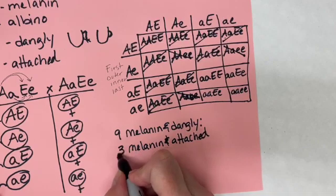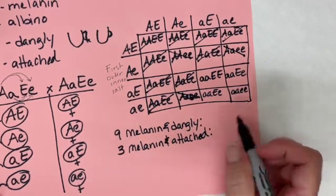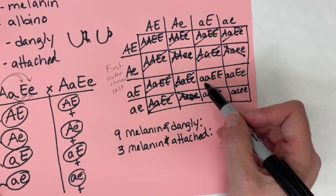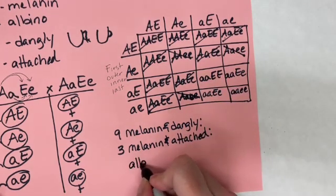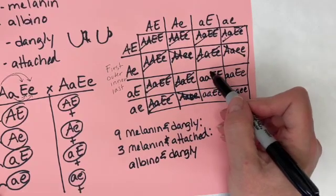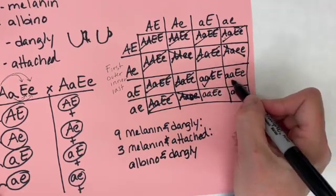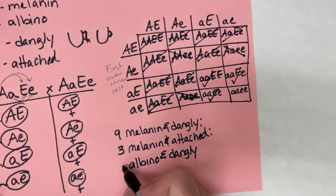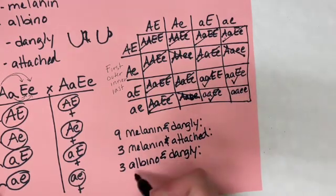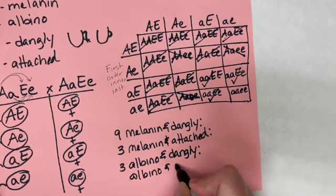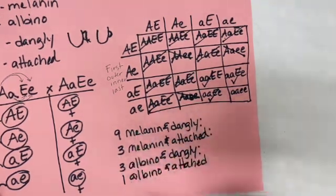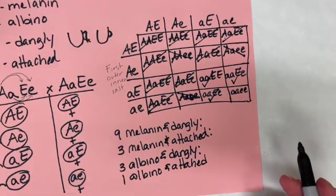Putting my colon there, I look at my next box that is not crossed off and I have individuals that are albino with dangly ears, so I just write that down: albino and dangly. And how many of those do I see? So let's do a check mark—one, two, three. I have three of those. I only have one box left, and that individual is albino with attached earlobes, and there's only one of those. So this is the proper way to do a predicted phenotype given that you have a dihybrid cross where each individual parent in the cross is heterozygous.